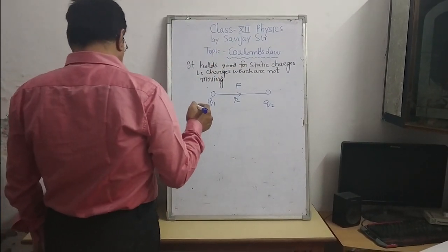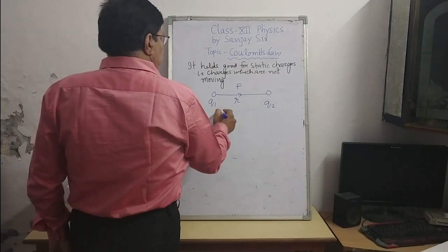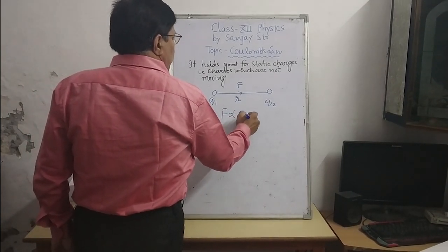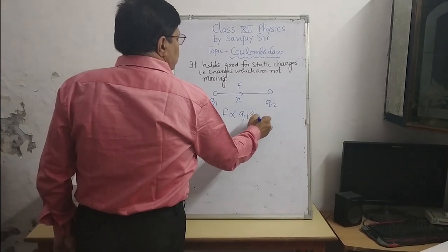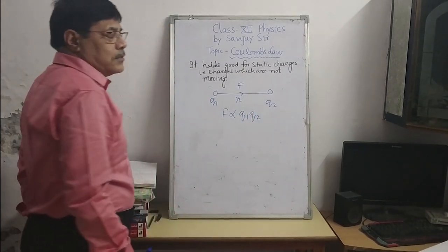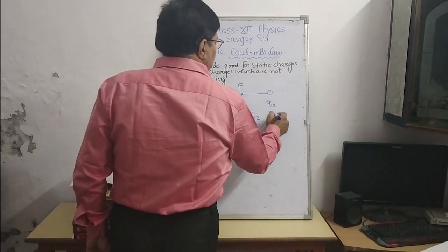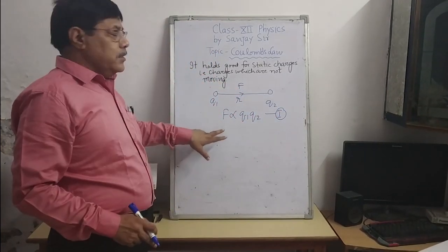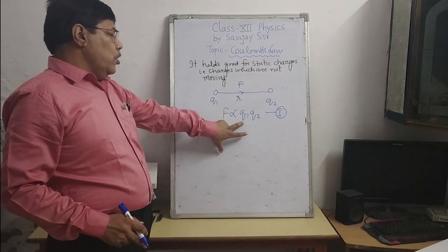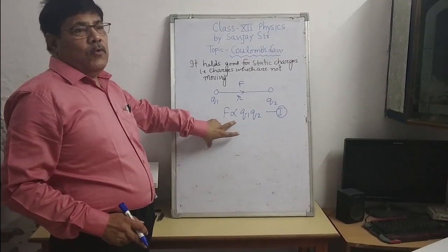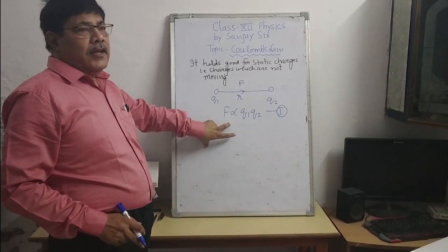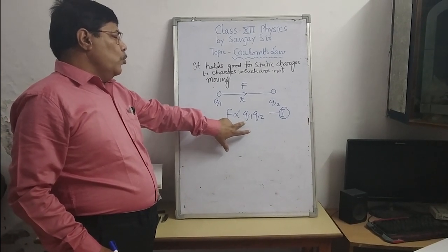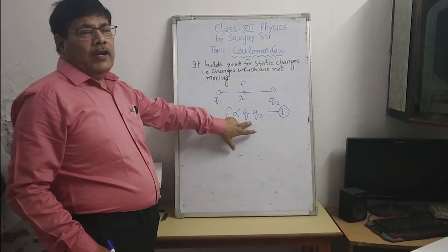The force acting between them will be directly proportional to the product of charges. This is equation number one. Directly proportional means if the value of the product of Q1 and Q2 increases, the value of F will increase. If the value of F decreases, the value of the product of Q1 and Q2 will decrease.